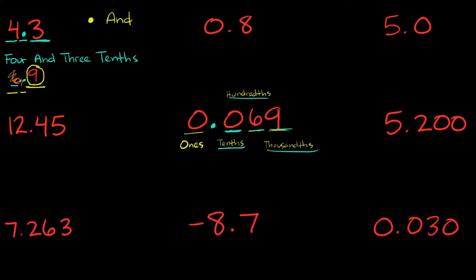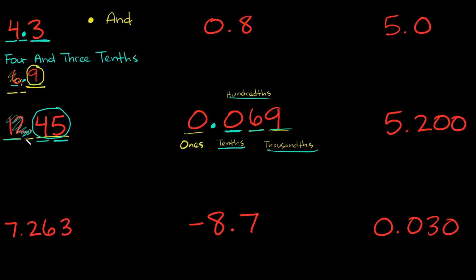Let's jump to the next example: 12.45. The proper way of reading this is 'twelve and forty-five hundredths.' To figure that out, ignore the twelve and the decimal. What number is this? That's just 45. What place value does it end in? Tenths, hundredths — and that's where it ends. So I would read that as '45 hundredths,' making the whole number 'twelve and forty-five hundredths.'